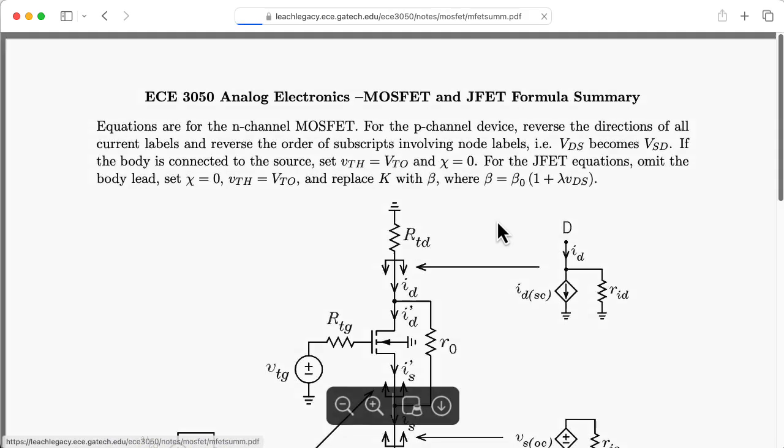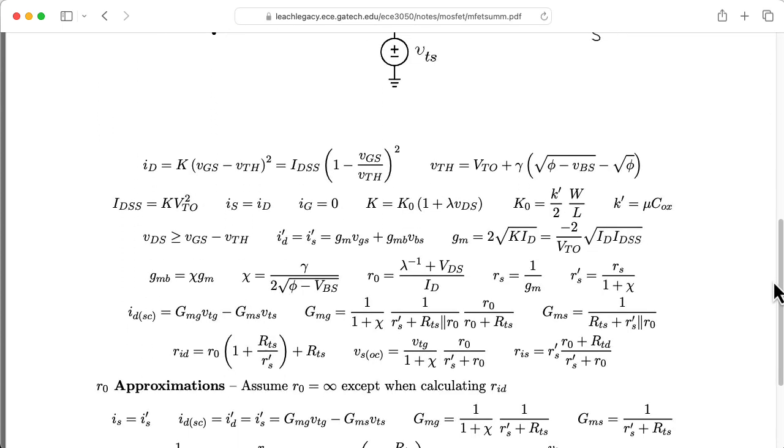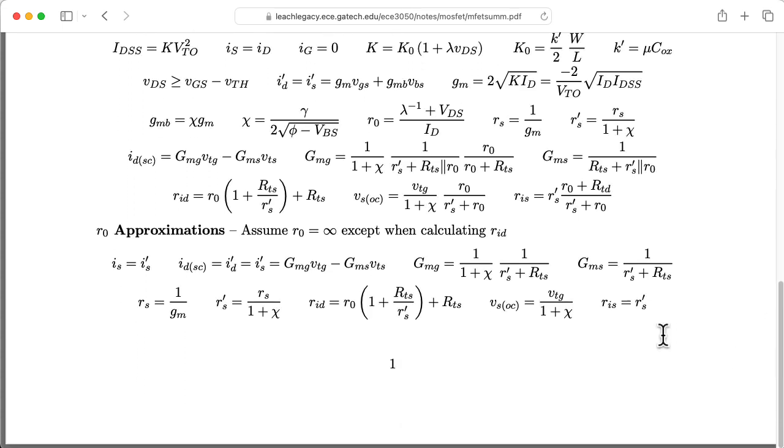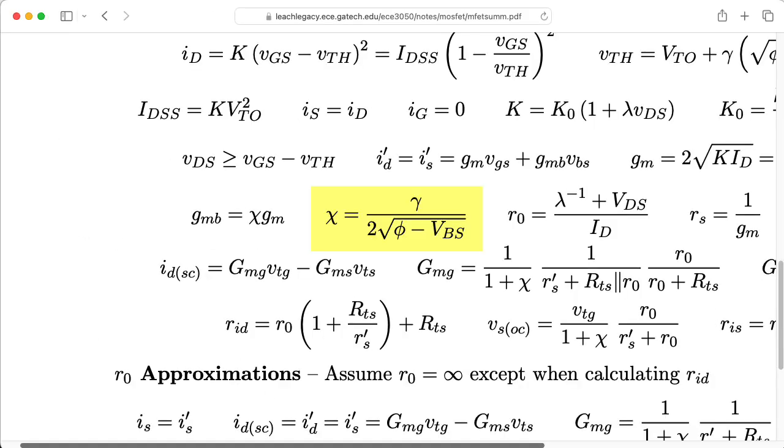Now, what if you have a MOSFET instead of a JFET? If you have a MOSFET where the bulk is hooked to the source, then all of the various formulas are the same. If you have one where the bulk is not hooked to the source, then there's a couple of modifications. There's this 1 over 1 plus chi factor that goes in front of your formula for GM. And in this formula for RID, we have this rs prime where instead of having rs there, we'll have rs divided by 1 plus this chi factor. We'll talk about this chi factor in a future lecture.